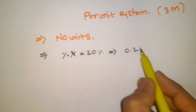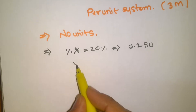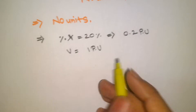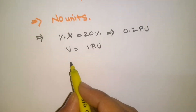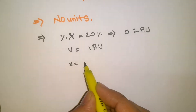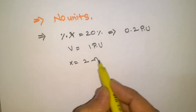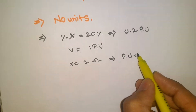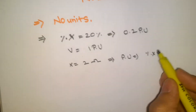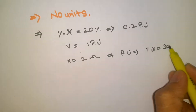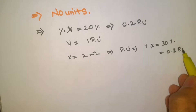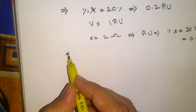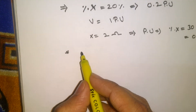If percentage impedance is 20%, we convert it to 0.2 per unit. If voltage is 1 per unit, this is the per unit system. In the actual system we say X is equal to some 2 ohms, but in the per unit system we use percentage of X — say 30% — so 0.3 is the per unit value.